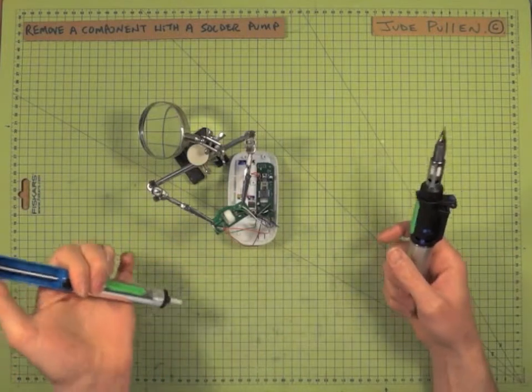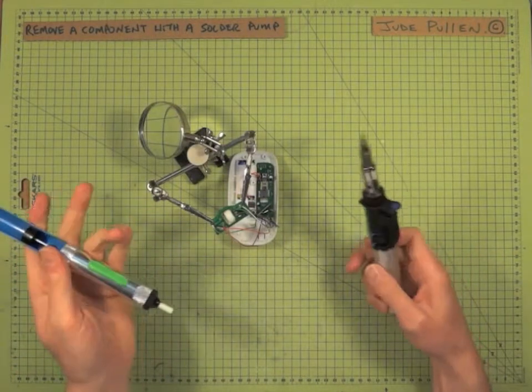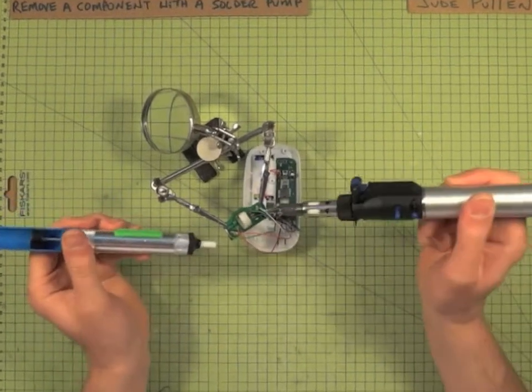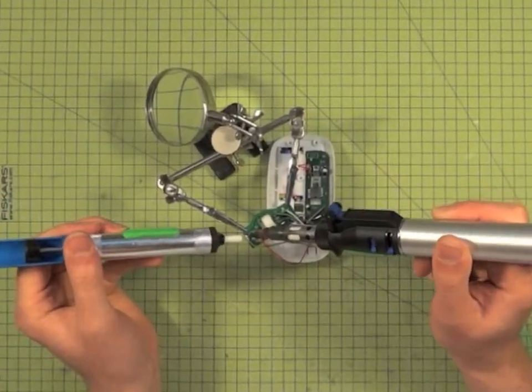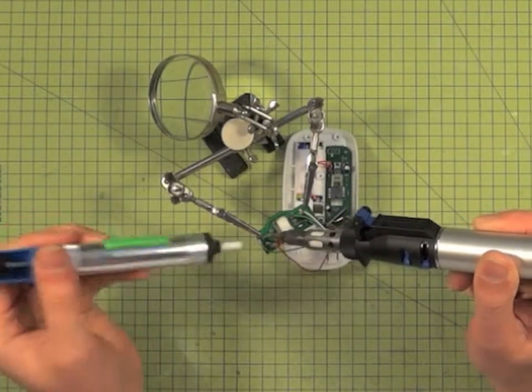Then you prime the solder pump like that, and that's going to be the release button. So basically, heat the solder joint and bring this tip in close.